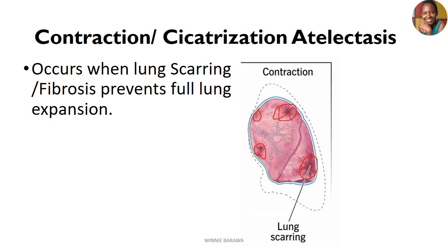Contraction, also called cicatrization atelectasis, simply means a scar or healing tissue that is making the lung fail to expand. The best way to understand this is: when you have a wound and it heals, it leaves a scar. The scar area is less elastic compared to uninjured skin. When you have a scar on lung tissue, the same effect occurs — that area is less elastic. So when we breathe in, we are not able to expand our lung tissues adequately. The lung scar is also called fibrosis.